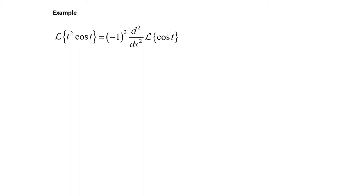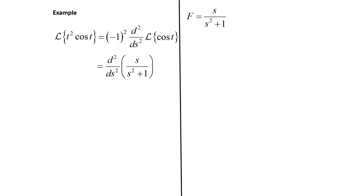Negative one squared is positive one, so that goes away. We have the second derivative with respect to s, and the Laplace transform of cosine of t is s over s squared plus one. So we want to take the second derivative. Our function F(s) is s over s squared plus one. Taking the first derivative using the quotient rule gives us one minus s squared divided by (s squared plus one) squared.